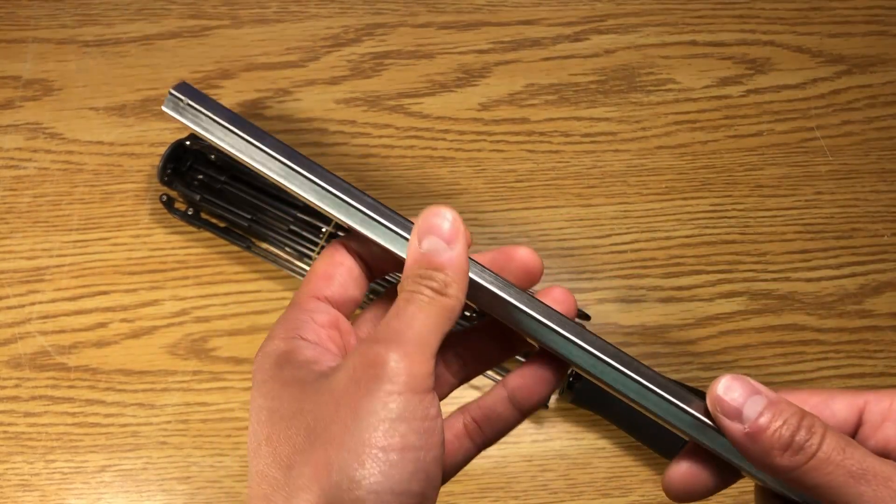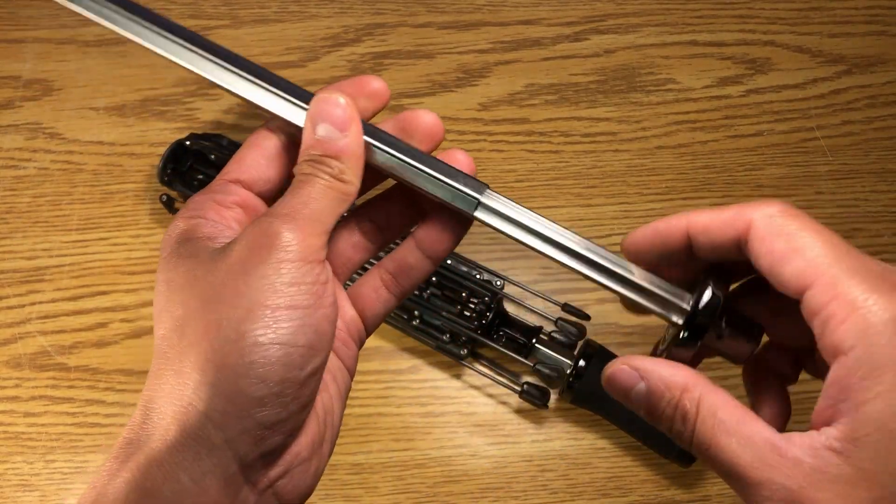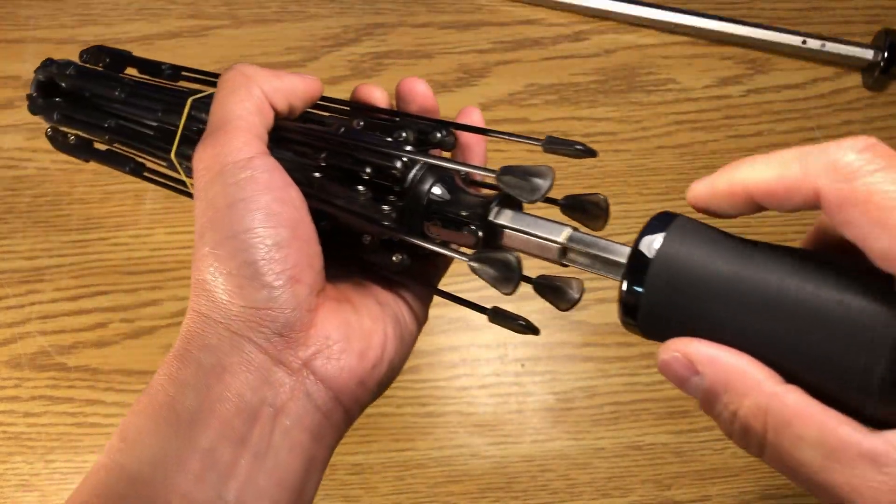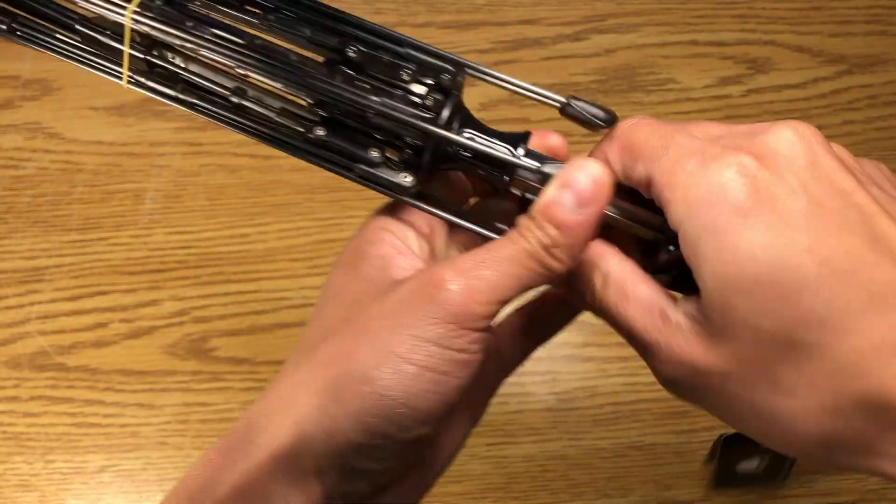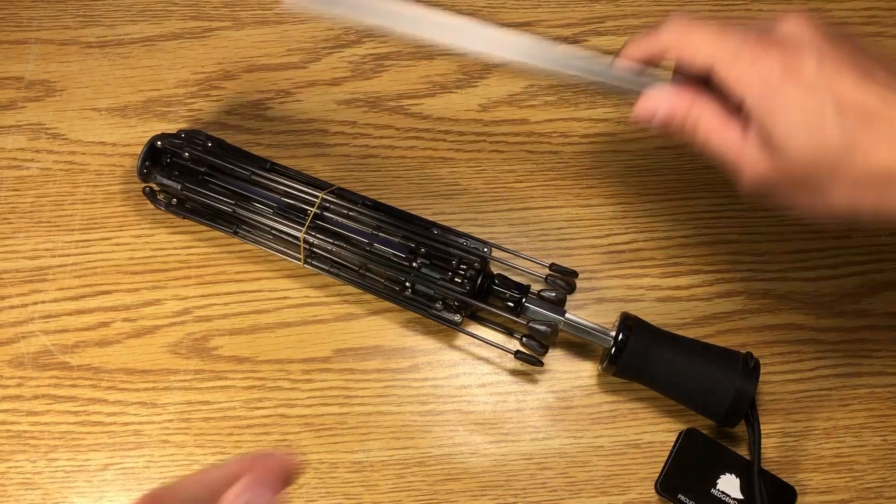One part that I like the most besides the strength and the stiffness is the full internal locking mechanism. So when the umbrella locks closed, you can hear the click. All those components that make that a reality are all housed inside the stem itself.